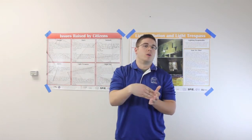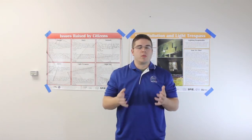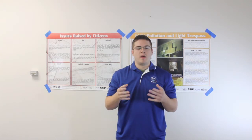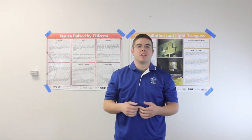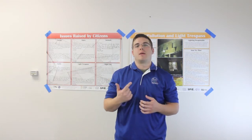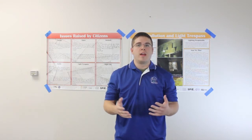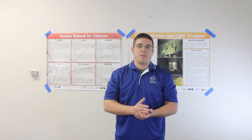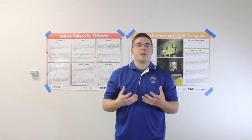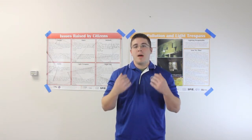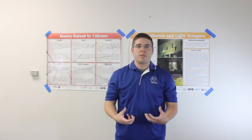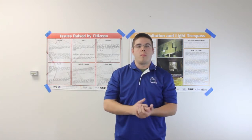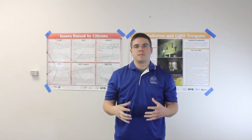A perfect example of light trespass is light from a street light passing through a window into a home. This can actually raise a couple of health concerns. Blue light, for example, most commonly found in LEDs such as phone screens, laptops, iPads, and TVs — basically all the things we use at night — is especially bad because it can suppress the brain's production of melatonin. Melatonin is a hormone that the brain releases to prepare the body for sleep.